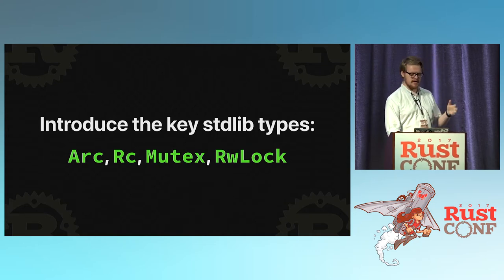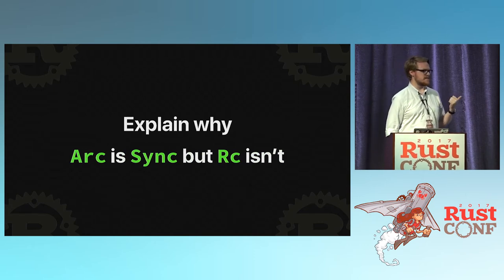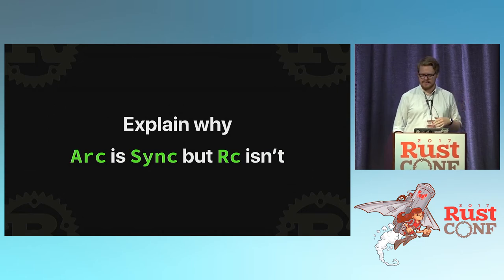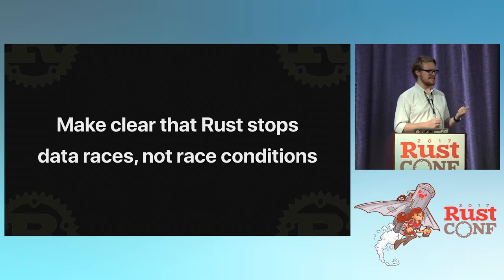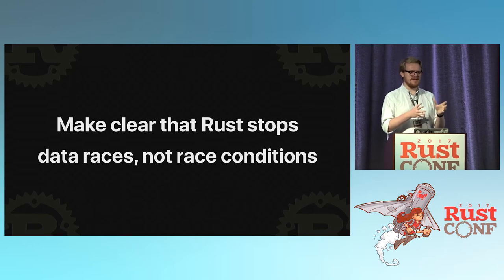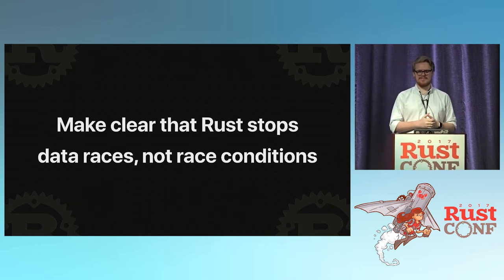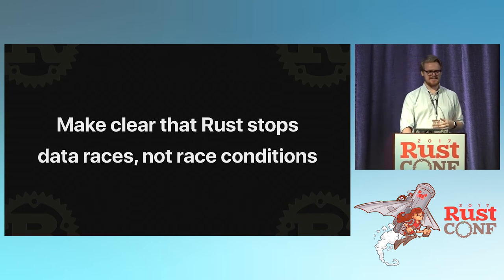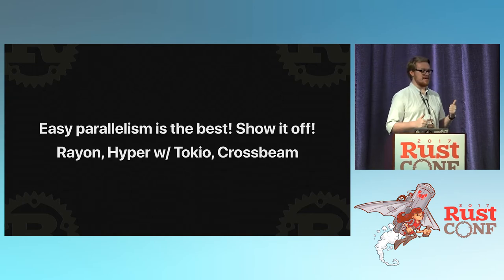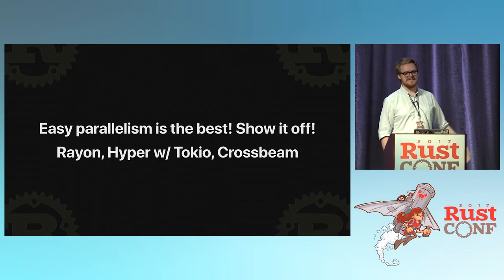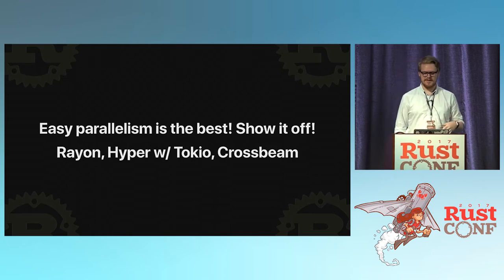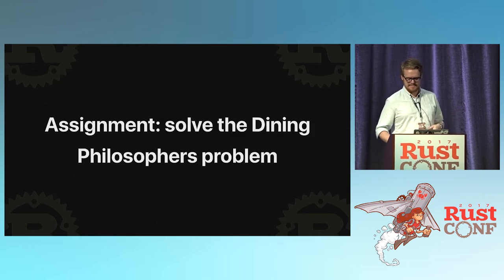It's crucial to explain why ARC is Sync but RC isn't — the idea that you can have types which are similar except for being thread-safe or not. And this is a big one that gets confused even in online conversations about Rust: make it clear that Rust stops data races, not race conditions. I've seen so many times when people pitch Rust and say it stops race conditions — no, it does not. Rust is great and stopping data races is great, but it doesn't stop race conditions in general, and it's probably not good to tell people that it does. Rust also has super cool easy parallelism libraries that show off how easy it is to take a for loop and make it parallel.